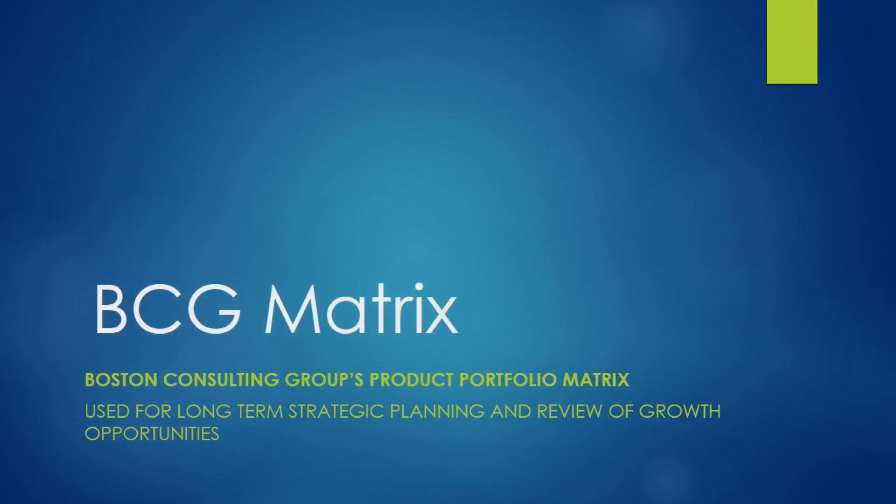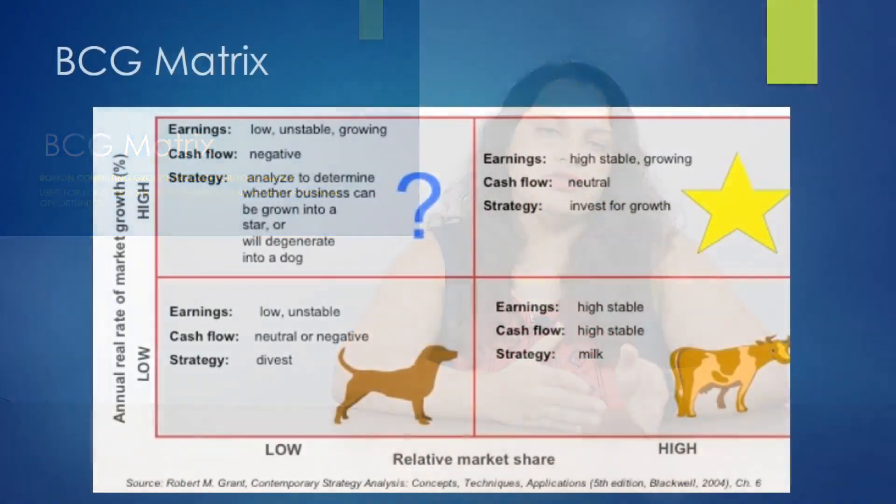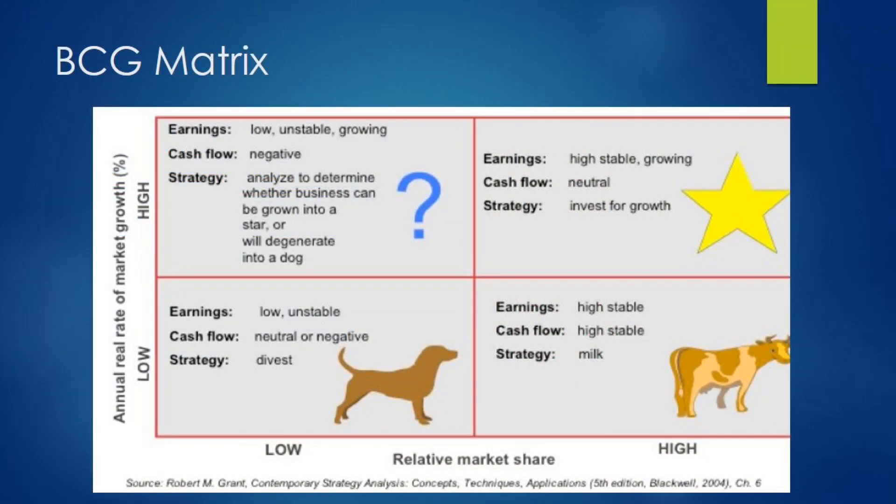Today we will be covering the topic BCG Matrix, which is a strategic measurement tool used in continuation to PLC, which was the topic of discussion in our previous video. The full form of BCG Matrix is derived from the parent company that proposed this matrix, which is Boston Consulting Group, hence the name BCG. It is a four-quadrant matrix which maps products and brands across different quadrants on the basis of their revenue share and growth contribution.